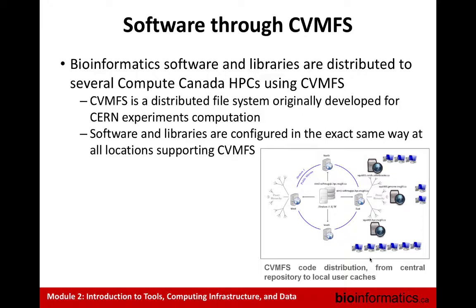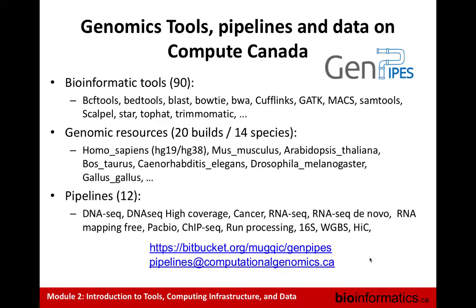The idea is we take care of installing and maintaining the resources in one location, and then every site will have the same resources available. So you could use a cluster in Ontario, British Columbia, or Quebec and you will have access to the same software, the same datasets in terms of genome references, and so on. We do that through an initiative we call GenPipes, where we provide bioinformatics tools — more than 90 different tools for genomics.